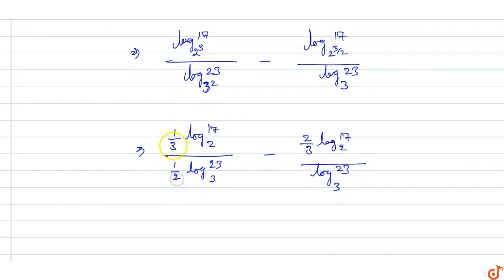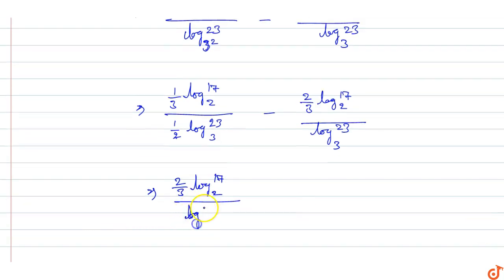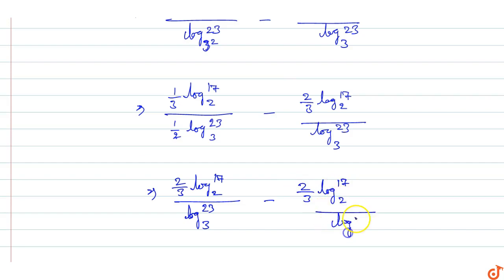Both terms simplify to 2 by 3 times log 17 base 2 upon log 23 base 3, minus 2 by 3 times log 17 base 2 upon log 23 base 3. Both are cancelled out, so this is equal to 0.